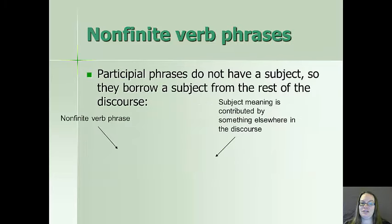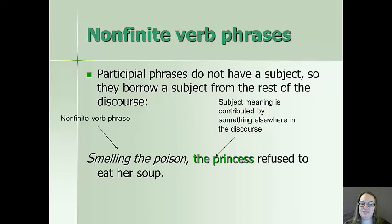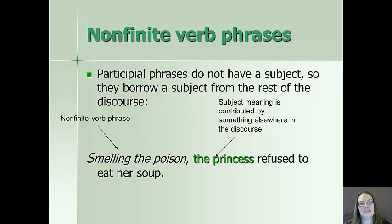Participial phrases do not have a subject, so they borrow a subject from the rest of the discourse. For example, 'smelling the poison, the princess refused to eat her soup.' 'Smelling the poison' is the non-finite verb phrase. It doesn't have a subject, so it borrows the subject from 'the princess,' meaning the princess was both smelling the poison and refusing to eat her soup.